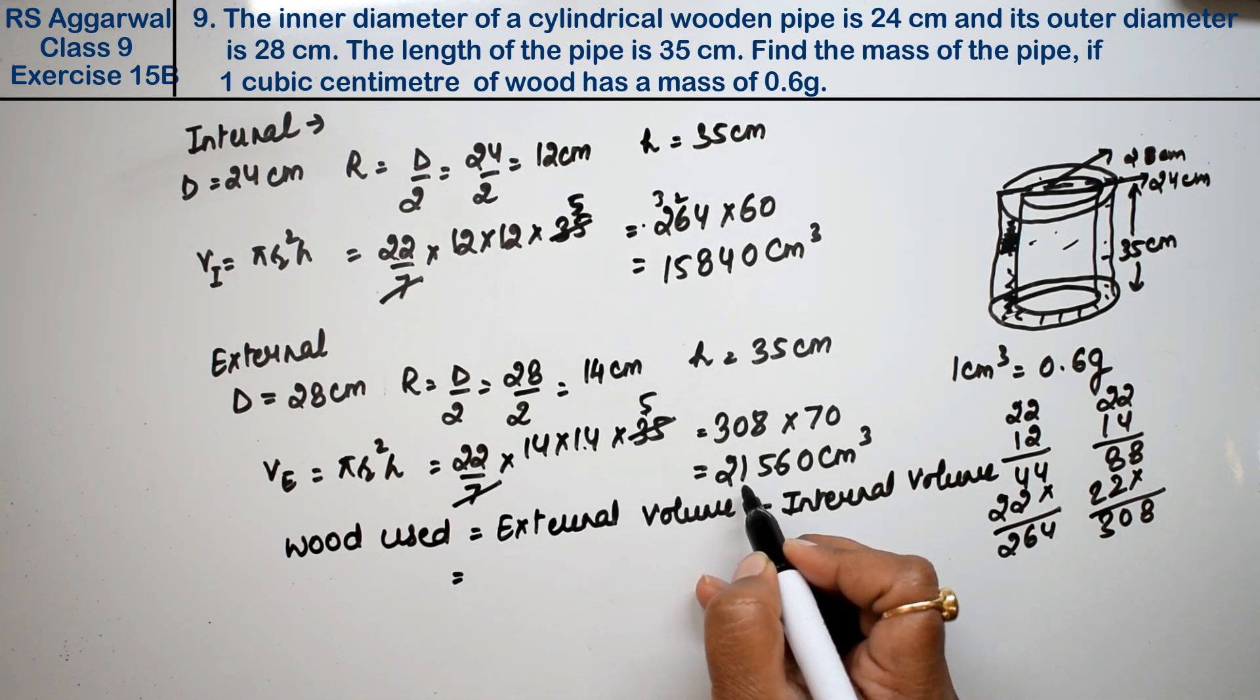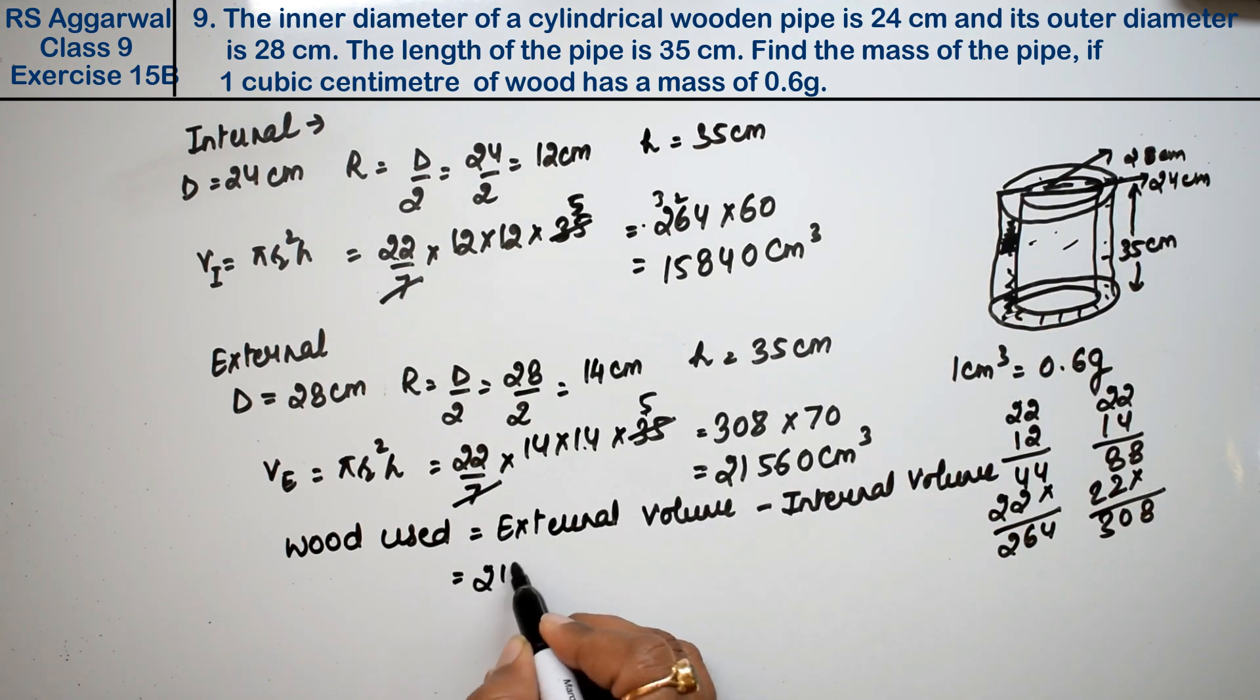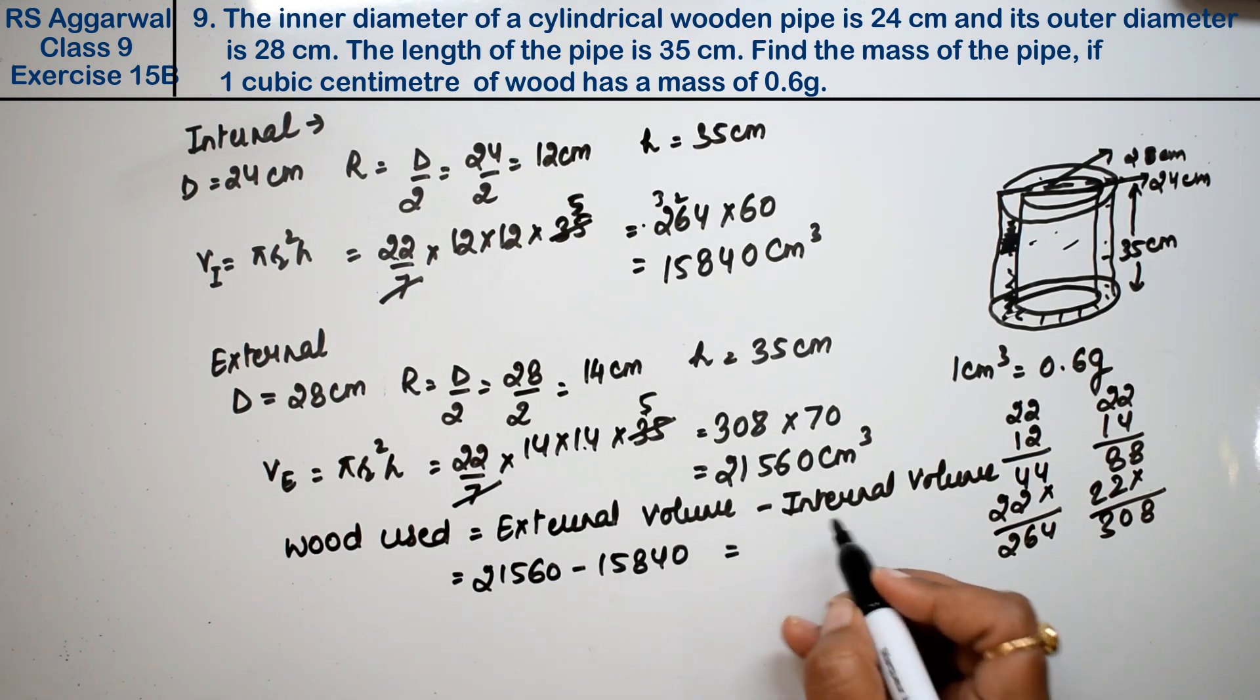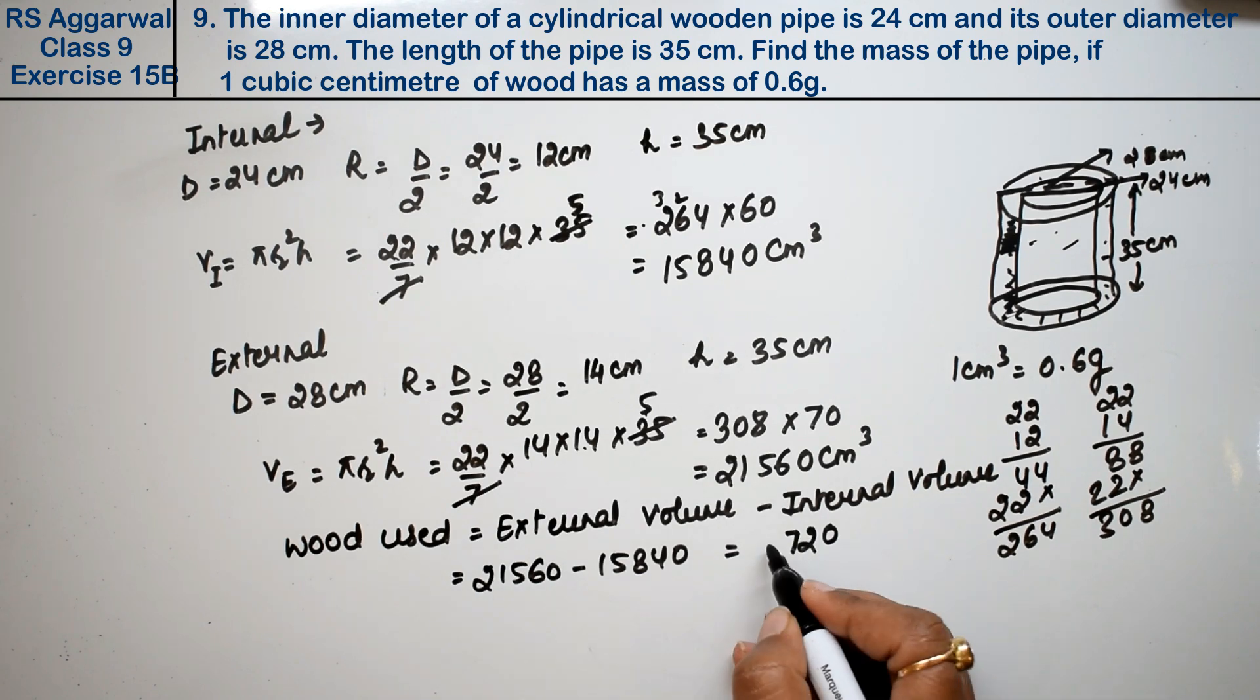So how much wood was used? First we'll find wood used in cubic centimeters. We find that from external volume minus internal volume. The external is the bigger container, so 21,560 minus 15,840.